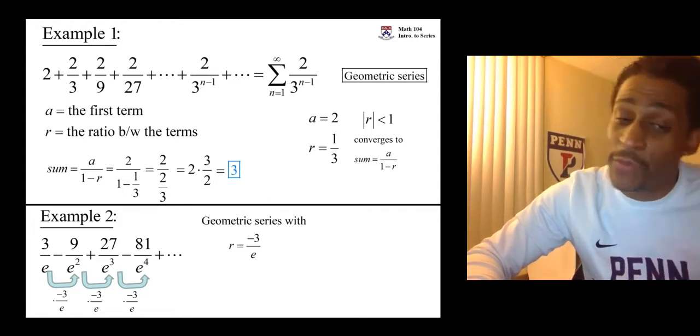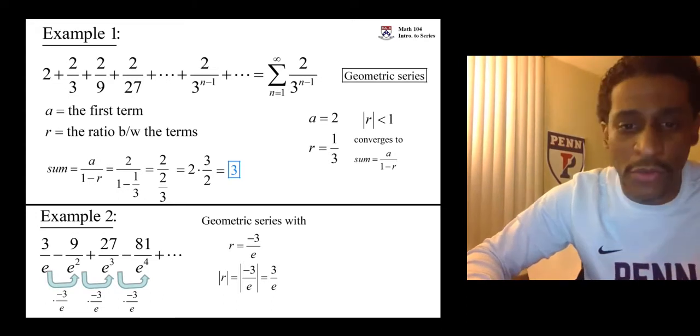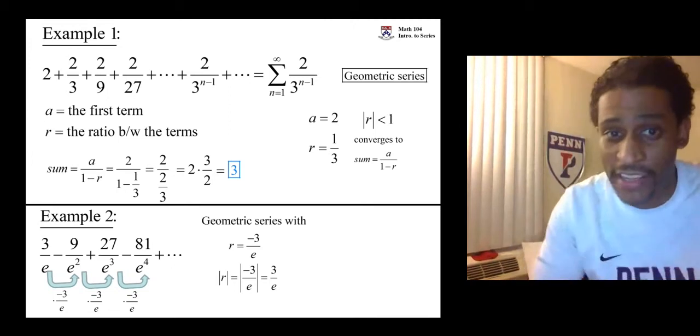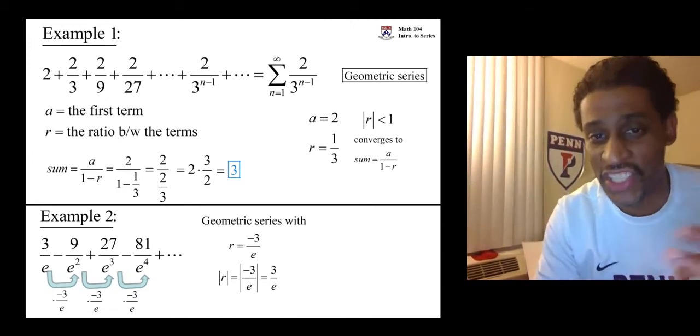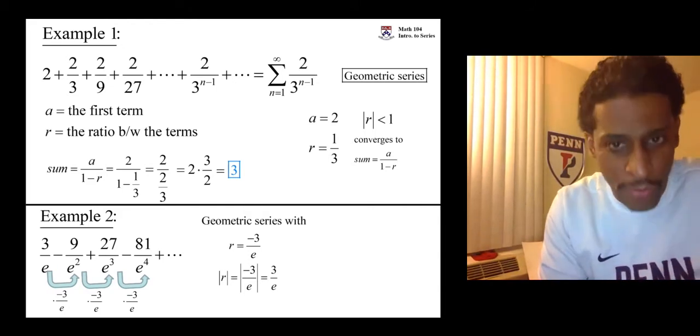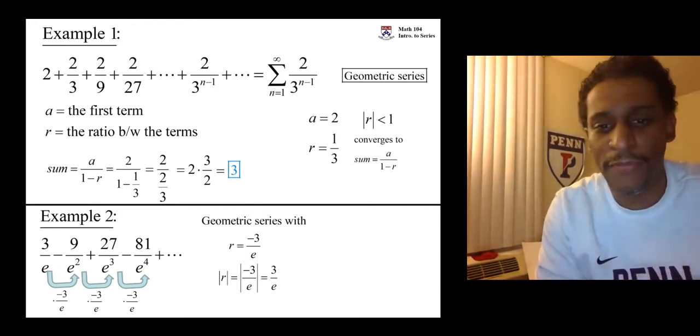And we have to decide whether that ratio is less than 1 in absolute value. The absolute value of negative 3 over e is 3 over e. We need to know how e compares to 3. There's some constants that you need to know. The first few decimals. Like, you know that pi is 3.14 and then it goes on forever and never terminates, never repeats.